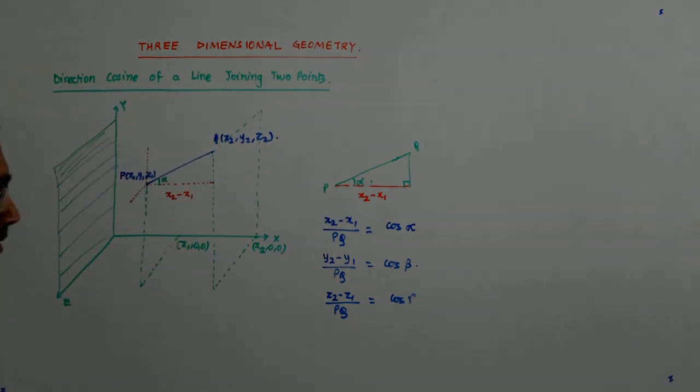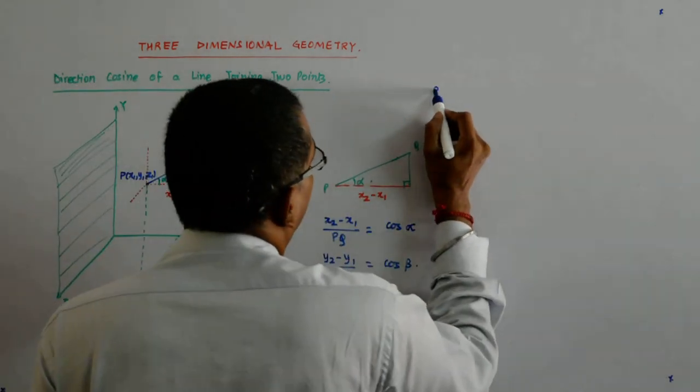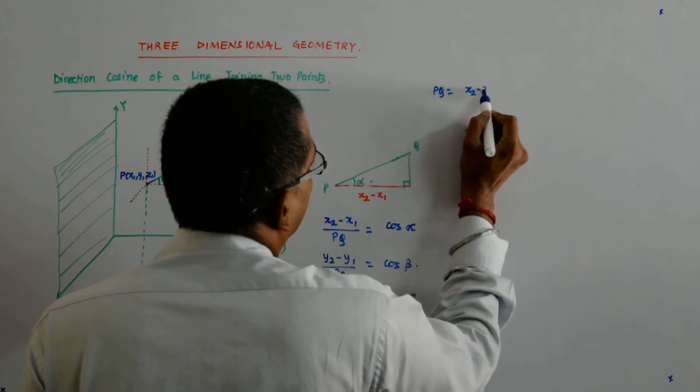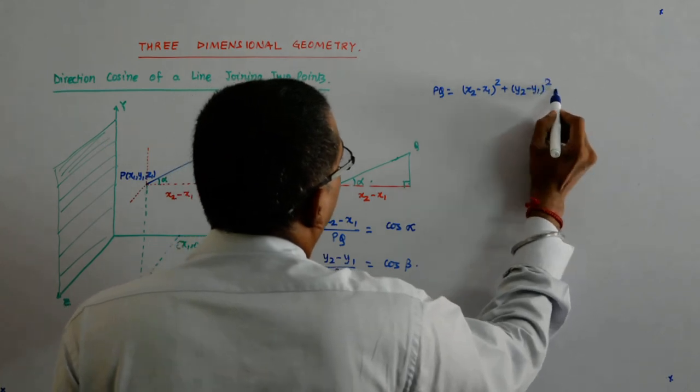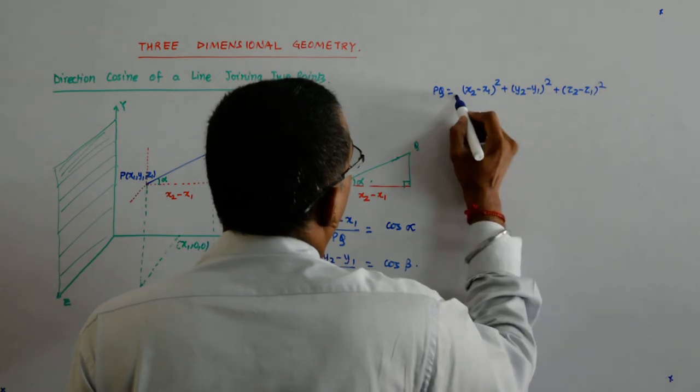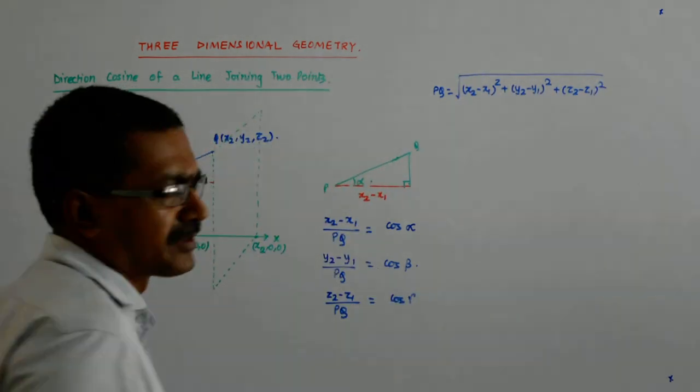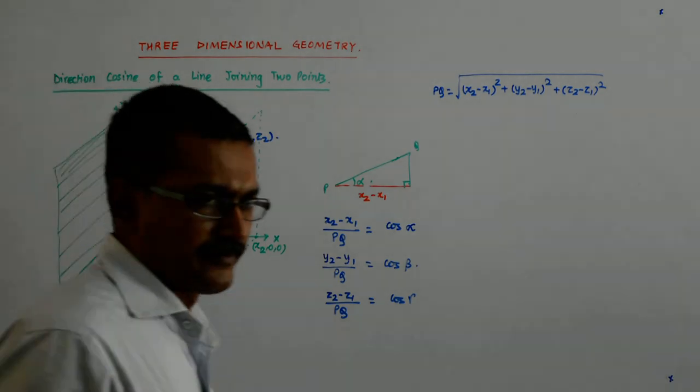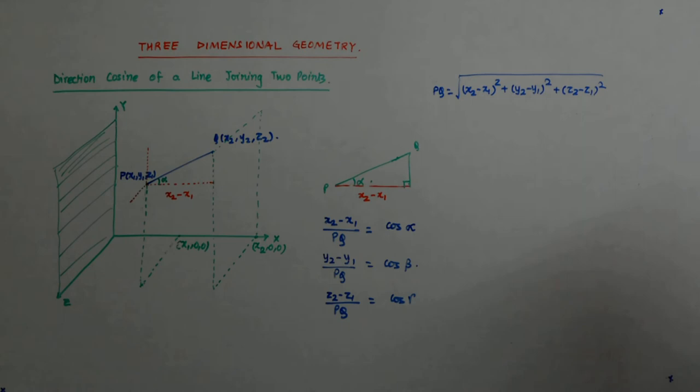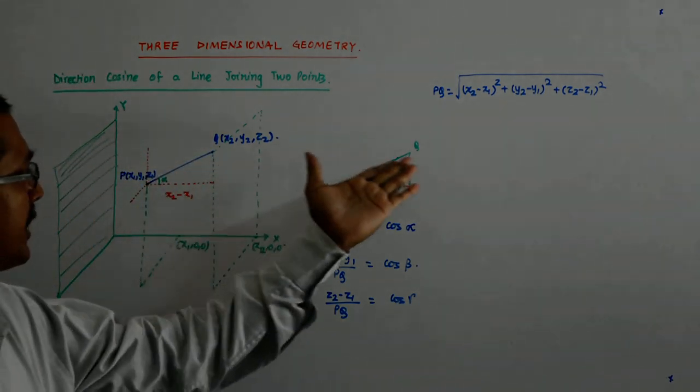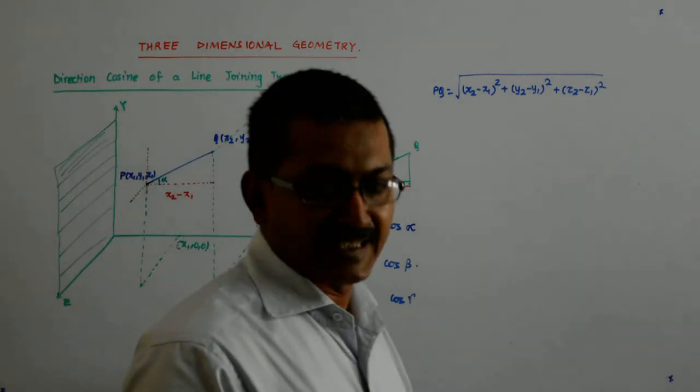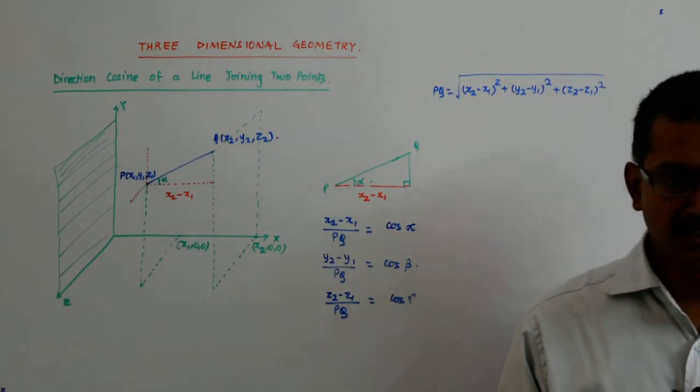So what happens? And I know what is my PQ? What is my PQ? By distance formula, it is x2 minus x1 whole square plus y2 minus y1 whole square plus z2 minus z1 whole square under the root and a positive number because it is a distance. So x2 minus x1 upon PQ is cos alpha, L. y2 minus y1 upon PQ is m. z2 minus z1 upon PQ is n. So just with x1, y1, z1 and x2, y2, z2, I have been able to find out my direction cosines of the point or of the line.